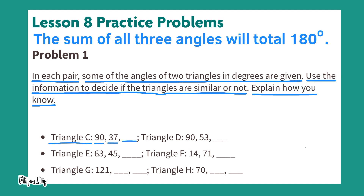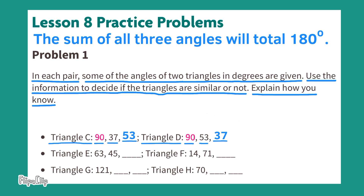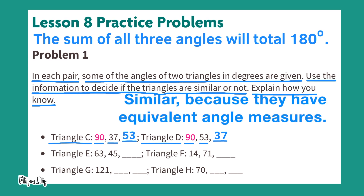Triangle C has angles 90 degrees, 37 degrees, and an unknown angle. Triangle D has angles 90 degrees, 53 degrees, and an unknown angle. The sum of all three angles totals 180 degrees. For Triangle C: 180 minus 90 minus 37 equals 53 degrees. So Triangle C's angle measures are 90, 37, and 53 degrees. Triangle D has the same angle measures. These triangles are similar because they have the same angle measures.